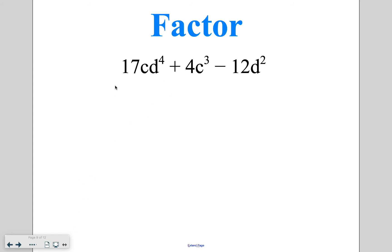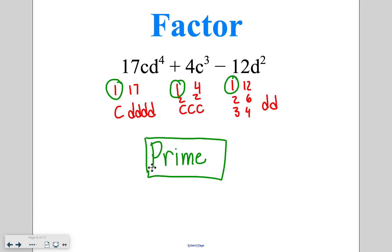Looking at this one here, as I start to list my factors, I've got 1 and 17, C with 4 D's. And then 1 and 4 with 3 C's. And also 2 and 2 in there. And then I've got 1 and 12, 2 and 6, 3 and 4 with 2 D's. As I go through and look, the biggest thing that shows up on both lists is 1, and we have no common variables. If the greatest common factor is the singular number 1, then we refer to this as a prime polynomial, meaning that you cannot actually factor it to make it any simpler.